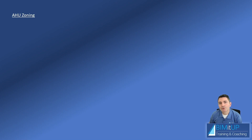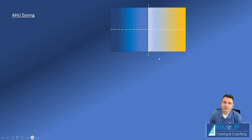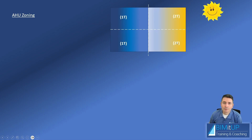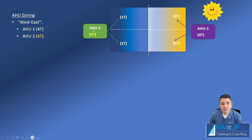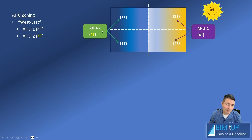Regarding HVAC zoning, let's divide your building into four quadrants. In the morning with the sun on the east, say you have four tons total on the east side and two tons on the west side. If you zone your air handlers east-west, AHU-1 on the east must be sized for four tons, and AHU-2 on the west must also be sized for four tons — even though it's only handling two tons in the morning — because that load will increase in the afternoon.